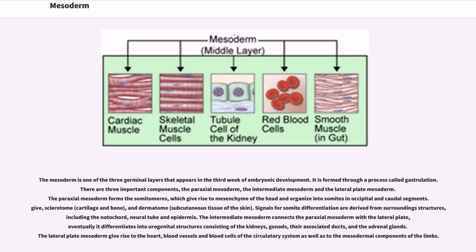The paraxial mesoderm forms the somitomeres, which give rise to mesenchyme of the head and organize into somites in occipital and caudal segments, giving sclerotome, myotome and dermatome. Signals for somite differentiation are derived from surrounding structures, including the notochord, neural tube and epidermis.